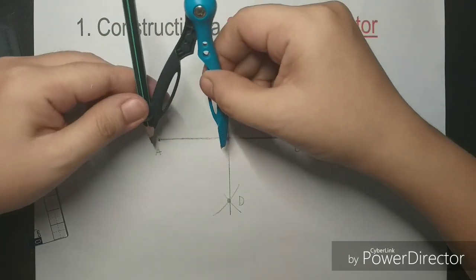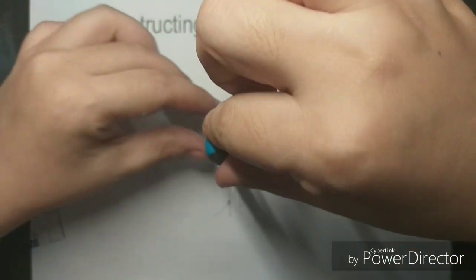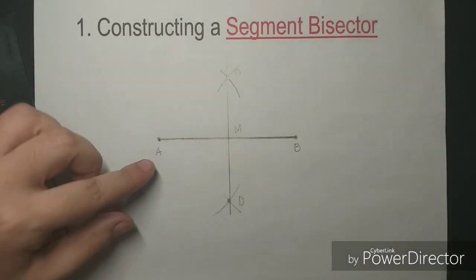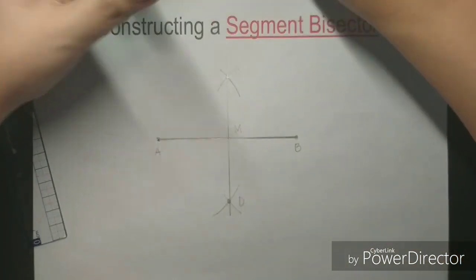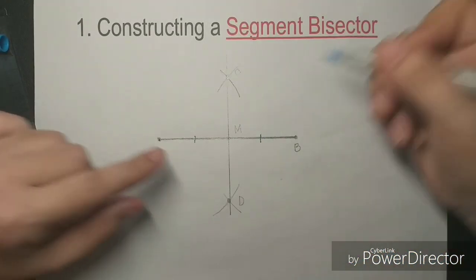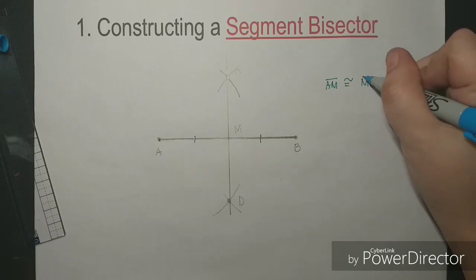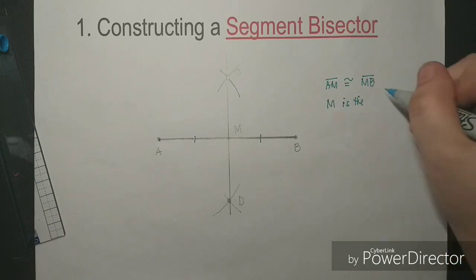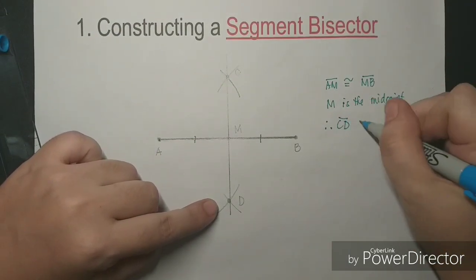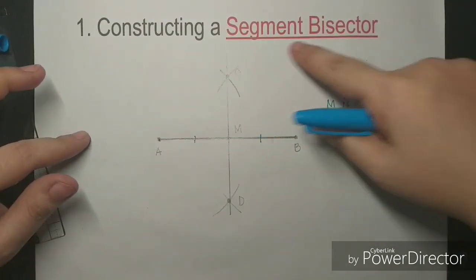Let's measure the distance from point A to point M, and the distance from point M to point B. You see that the distance from point A to point M — segment AM — is the same as the distance from point M to point B — segment MB. Therefore, line segment AM is congruent with line segment MB, where M is the midpoint. Therefore, we can say that line segment CD bisects line segment AB, and line segment CD is the segment bisector.